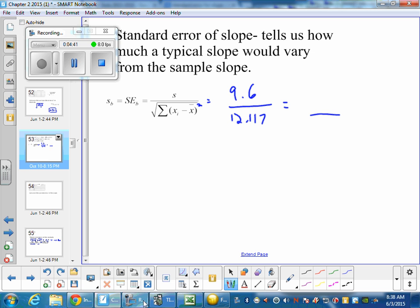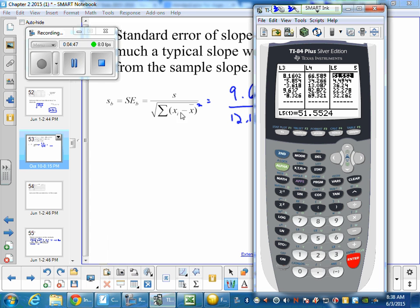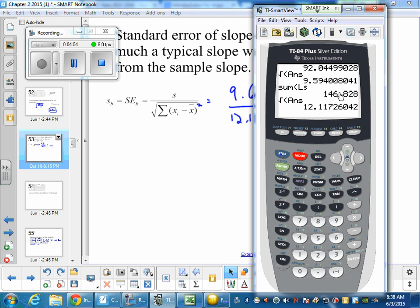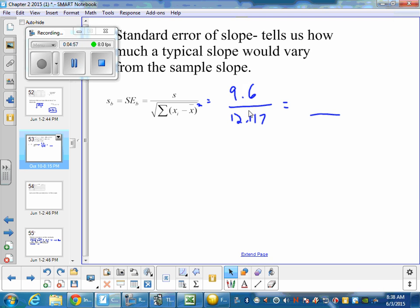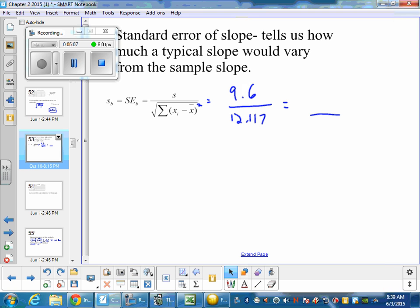Hopefully it's just squared on your note sheet, and then I summed all those up over here, and then I took the square root of them to get 12.117. And now if I take 9.6 divided by that answer, I get 0.79.